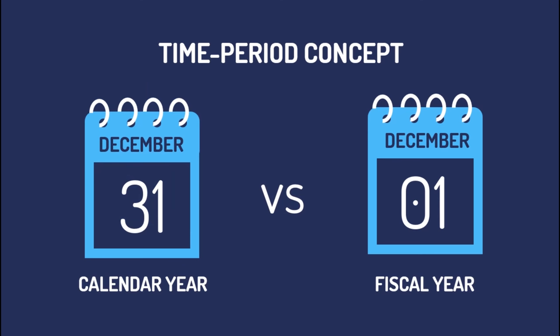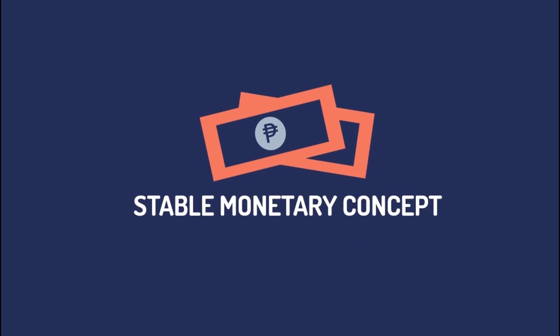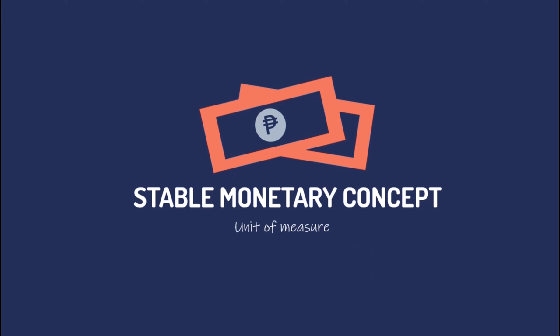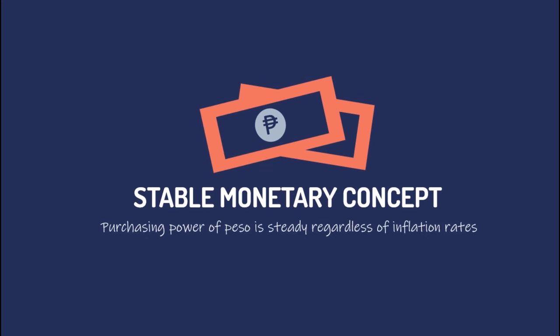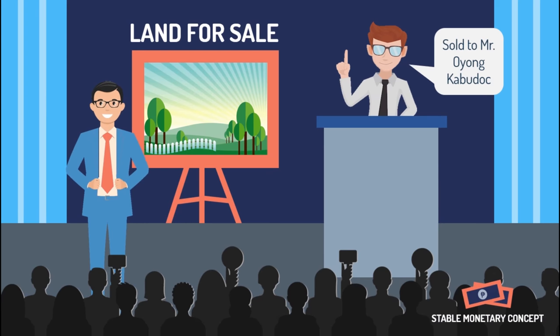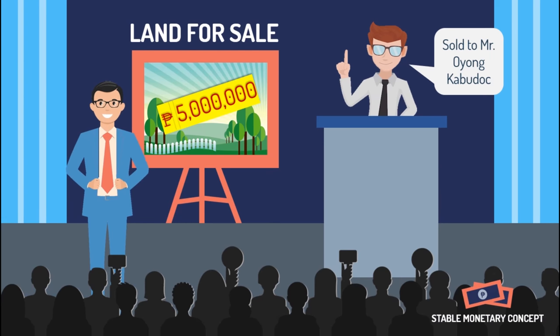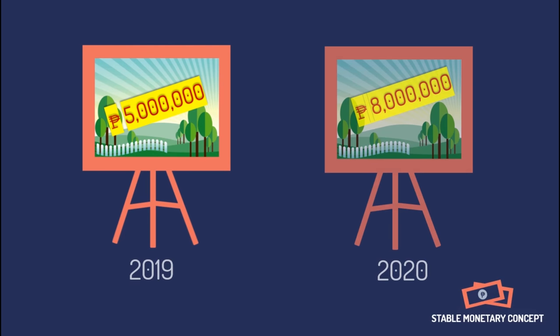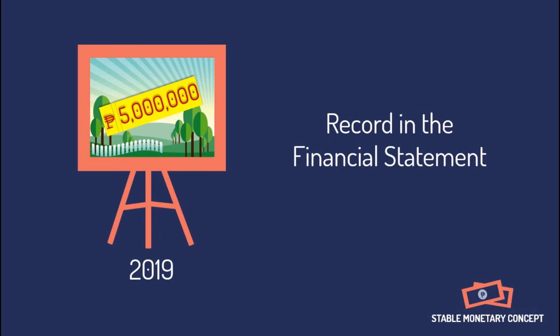Our fourth accounting assumption is the stable monetary unit, otherwise known as the unit of measure. The purchasing power of the peso is steady, regardless of inflation rates. This also means that the function of accounting is to account for the peso only and not for the change in its purchasing power. For example, Mr. Oyong Kabodok purchased a land worth $5 million a year ago. Even if the value of the land has already risen to $8 million, it will still be recorded in the Statement of Financial Position at $5 million. It will not be affected by inflation.